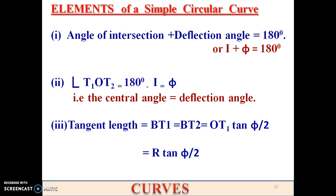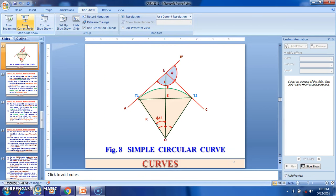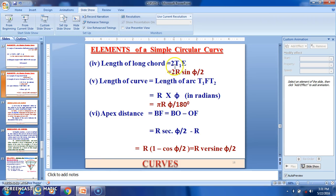Coming to the elements of the simple circular curve: the angle of intersection plus deflection angle equals 180°. The central angle T1OT2 equals 180 minus I, which equals phi — so the central angle equals the deflection angle. The tangent length BT1 equals BT2, which equals R tan(φ/2).